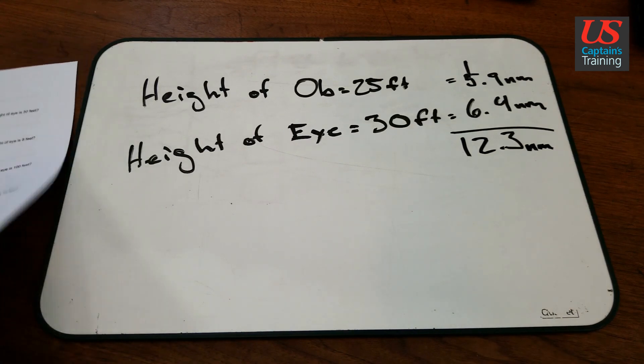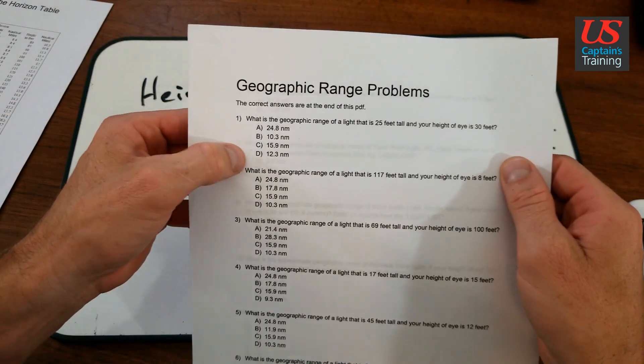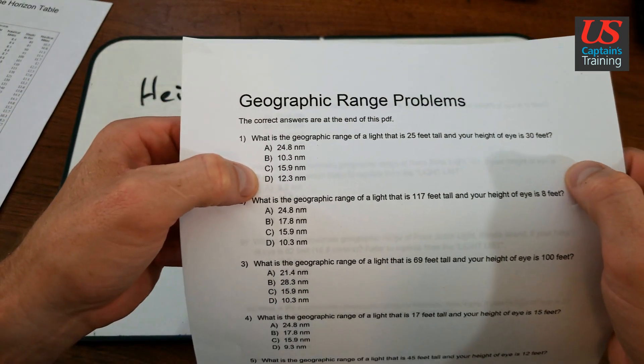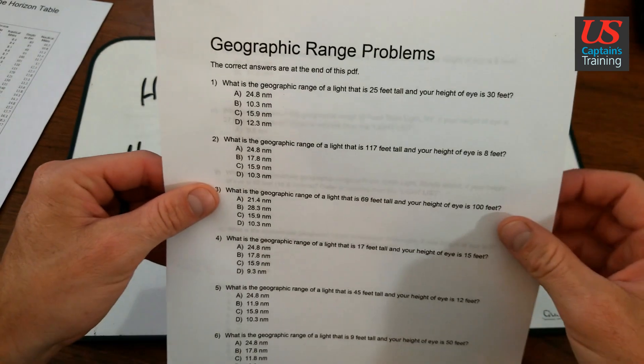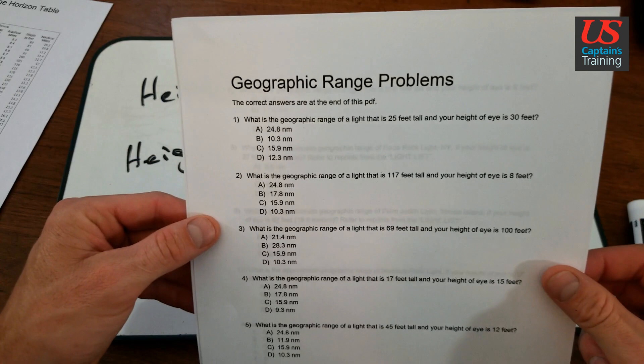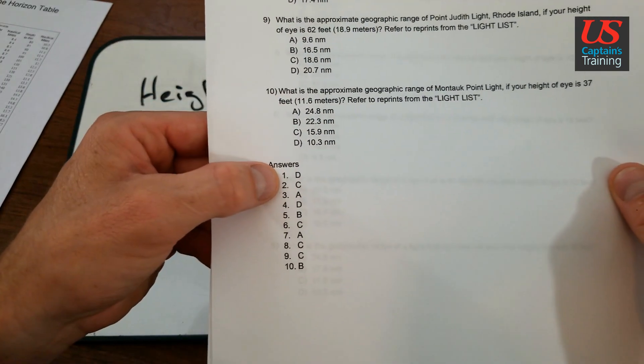Now let's check our answers, see if that's one of the options. And for 1, 12.3 nautical miles is D. So it looks like we're coming to the conclusion it's D. Let's check. Answer 1 is D.